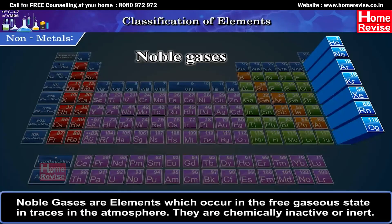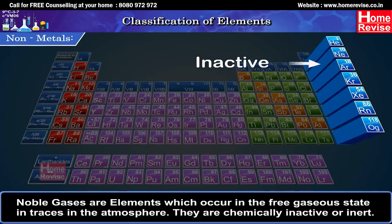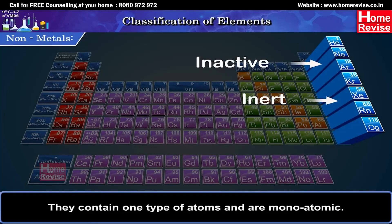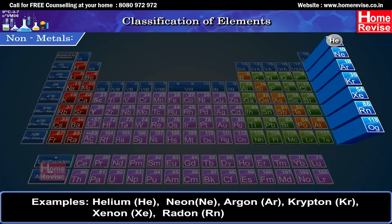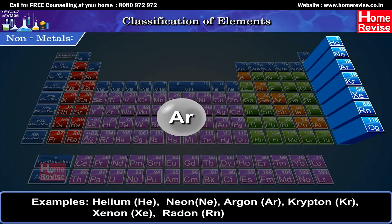Noble gases are elements which occur in the free gaseous state in traces in the atmosphere. They are chemically inactive or inert. They contain one type of atoms and are monoatomic. Examples: Helium (He), Neon (Ne), Argon (Ar), Krypton (Kr), Xenon (Xe), Radon (Rn).